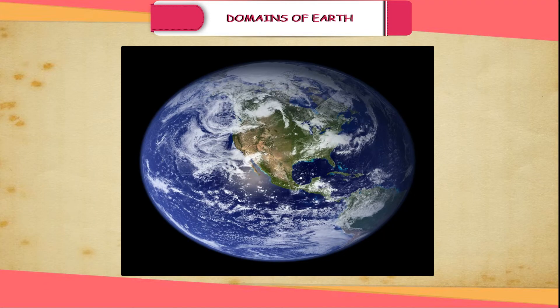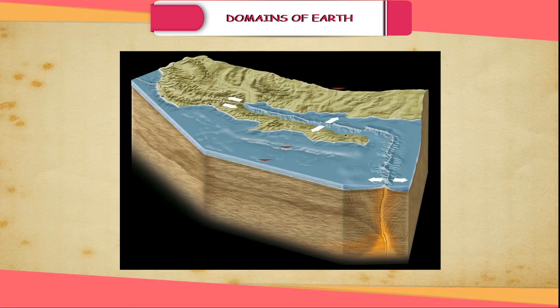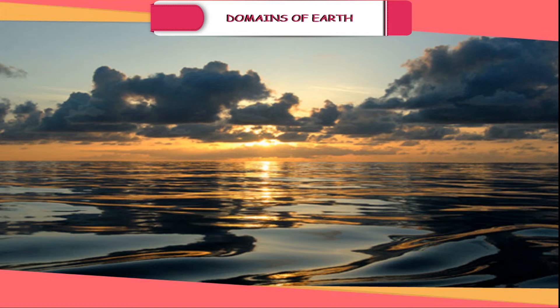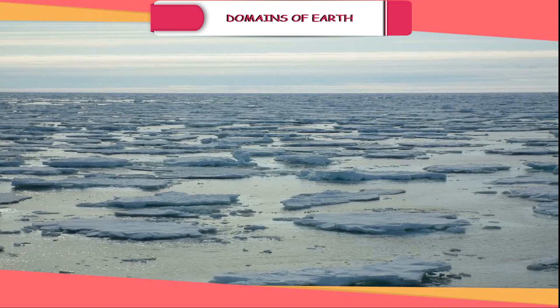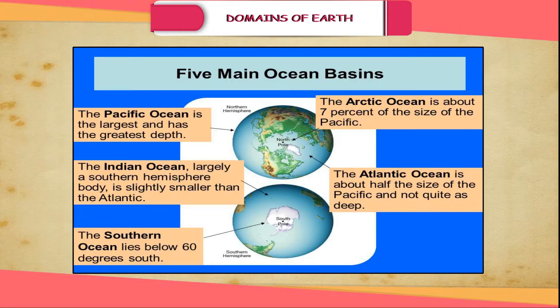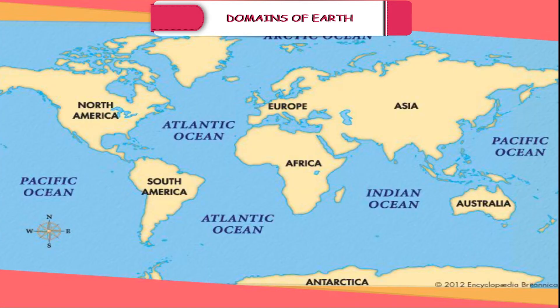Hydrosphere. Earth is also known as the blue planet because of the presence of water in oceans, on land and in the atmosphere. Water in all its forms on Earth accounts for 71% of Earth's crust. Oceans have more than 97% of all water found on Earth. The remaining 2.8% is in the form of ice sheets, glaciers, running water and underground water, which is called fresh water. The major part of the hydrosphere consists of five oceans — the Pacific Ocean, the Atlantic Ocean, the Indian Ocean, the Arctic Ocean and the Southern Ocean, in order of their size.